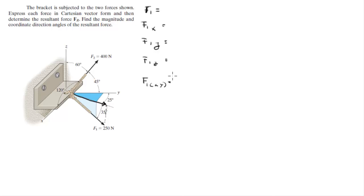So we need to find this projection in order to be able to find the X and Y components. The projection is equal to F1 cosine of 35, which is equal to 204.8.